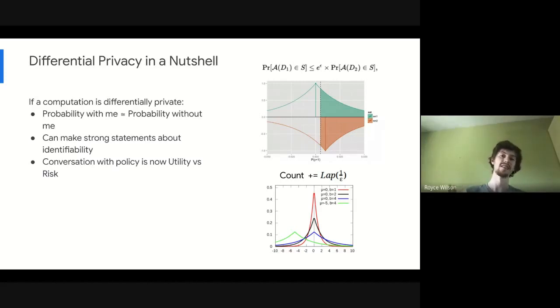Differential privacy is great because it allows you to have this very structured and principled conversation around the trade-off between the privacy statement being made and how accurate the results are.